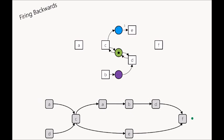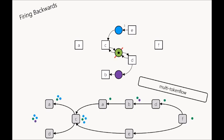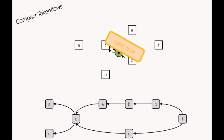So now we set the three places to the final marking. Then we flip the arcs of the net, we flip the arcs of the partial order and then we construct another multi-token flow but firing backwards. That gives us two more compact token flows and we can remove these places, leaving us with one place. Now this last place will be handled by the compact token flow algorithm using cubic time.